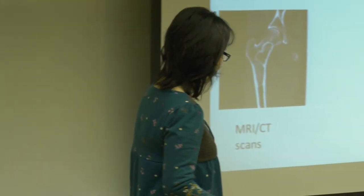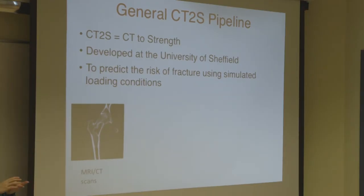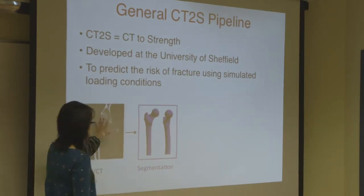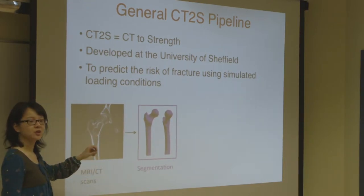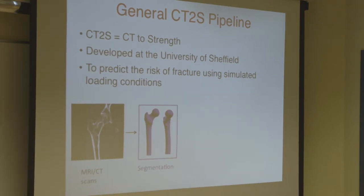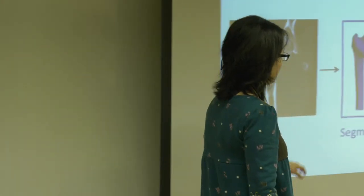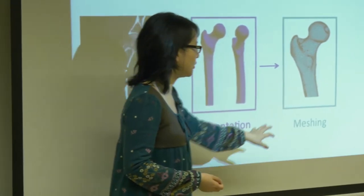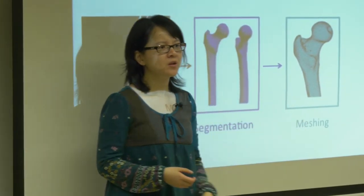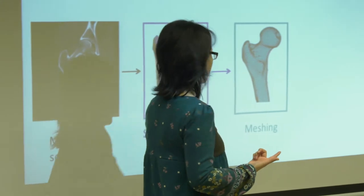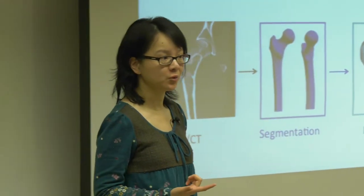Usually we start with a set of patient-specific images — typically MRI or CT scans. We go through a segmentation process to extract the volume information of a specific organ, in this case the femur. Once we have the volume mesh, we go through a meshing procedure to create our finite element models. ANSYS and Abaqus are the two biggest commercial companies providing FE packages, and they come with their own preferred meshing software.